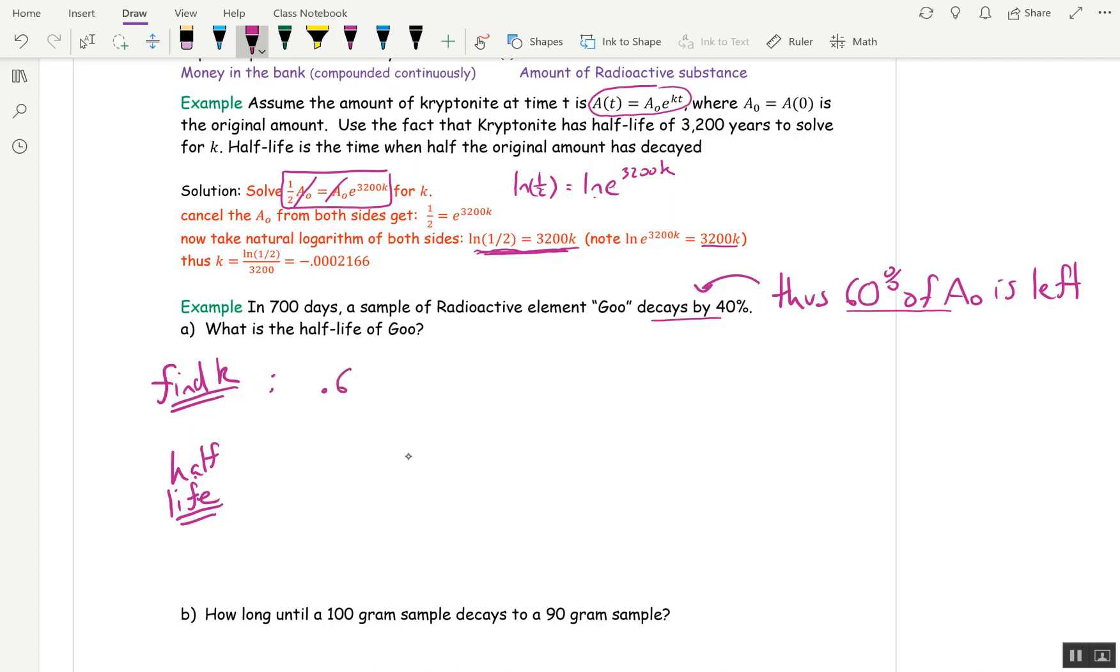So to find k, we have to solve this equation. 0.6A₀, that's how much is left, is A₀e^(700k). 700 days. So that's your starting point, and I'm going to want to see that. Cancel the A₀s. Take ln of both sides. ln of 0.6 is 700k because ln of e^(700k) is 700k.